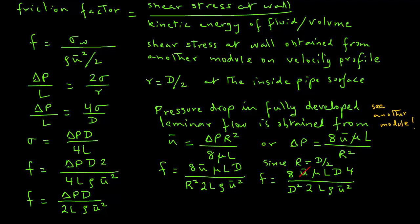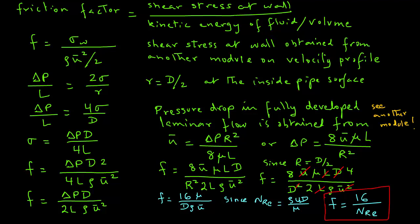Again, we can cancel out some of the terms and simplify this to get 16 mu divided by D rho u bar. We can simplify this further by noting that Reynolds number is rho u D over mu. And so we can say that our friction factor F equals 16 over Reynolds number.